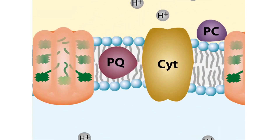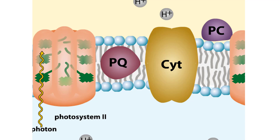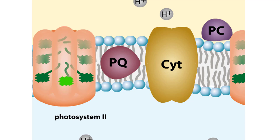When a photon strikes a photosystem, its energy is captured by one of the many pigment molecules in the photosystem's large antenna complex. After absorbing the energy, the pigment molecule passes the energy to other pigments until the energy reaches a chlorophyll molecule in the antenna's reaction center.